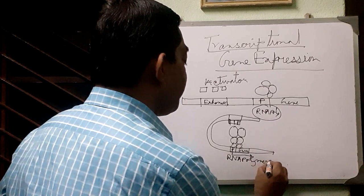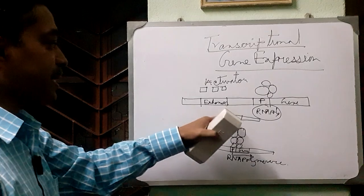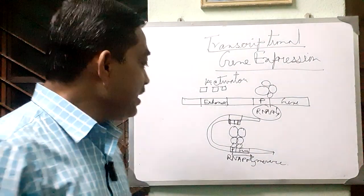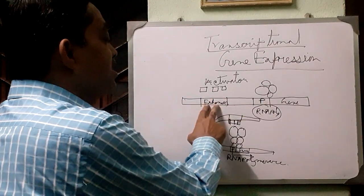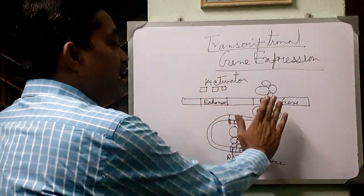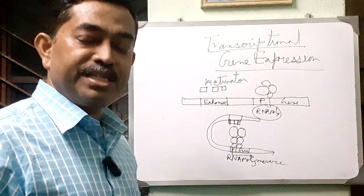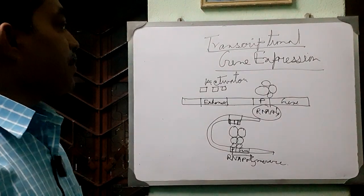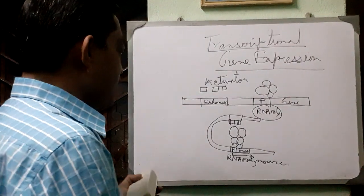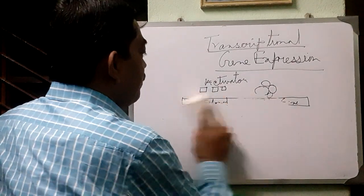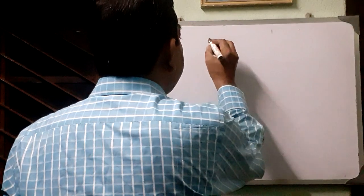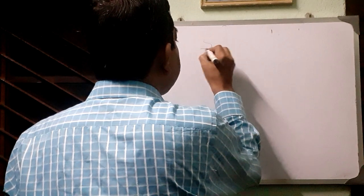In place of an activator, there may also be a repressor present. The repressor will bind to the promoter or enhancer region and block gene expression. Another important thing is the stability of mRNA — by transcription we will get the mRNA, and its stability is very important.